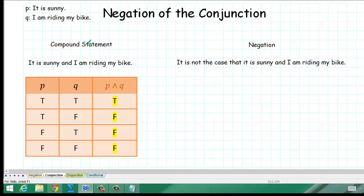Then the conjunction of those two simple statements would be, it is sunny and I am riding my bike. So what would the negation of the conjunction be? Well, one way to write it would be, it is not the case that it is sunny and I am riding my bike.